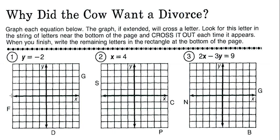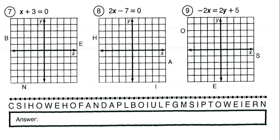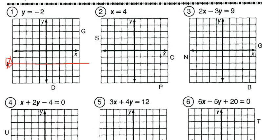Let's start with number one: y equals negative 2. The x-axis is the horizontal axis, the y-axis is the vertical axis, and 0,0 is dead center. So y equals negative 2 goes right at that spot, and we've got an F that we're going to cross out.